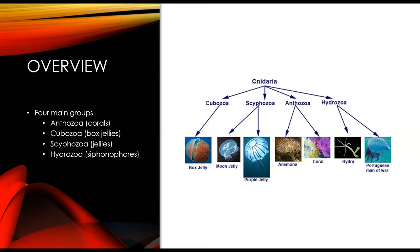Within the phylum there are four main groups: Anthozoa, which are our corals; Cubozoa, which are our box jellies; Scyphozoa, which are our regular jellies; and Hydrozoa, which are the siphonophores. For Hydrozoa we're looking at the Portuguese man-o-war and the hydras. For Anthozoa, the anemones and corals. Scyphozoa are our moon jellies and purple jellies, and Cubozoa are the box jellies.